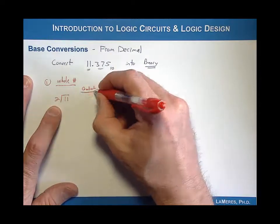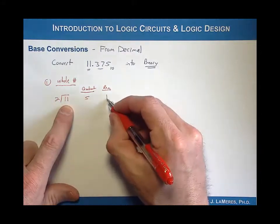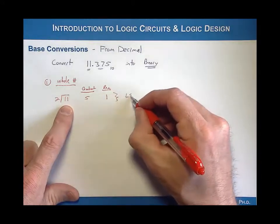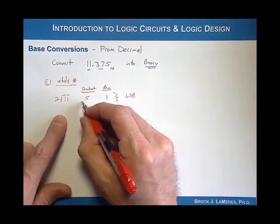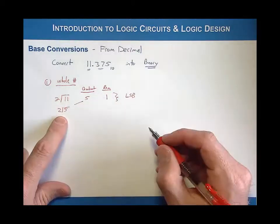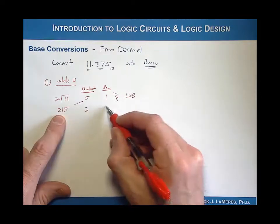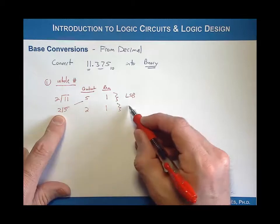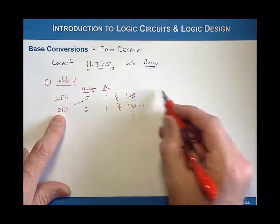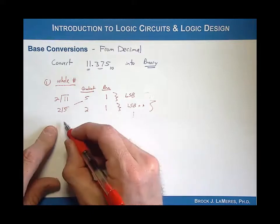Let's see how many times two goes into eleven. It goes in there five times and it has a remainder of one. We record the remainder as the least significant bit. Then we take the quotient five, move it down, and divide that again by the base. Two goes into five two times with a remainder of one, and that will now be recorded as the next LSB — LSB plus one. We continue this process to form the binary number representing eleven decimal until we reach a stopping point.